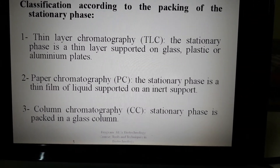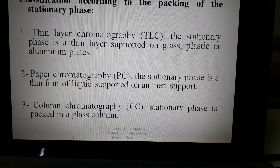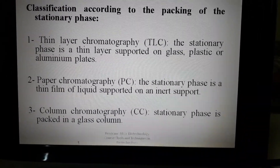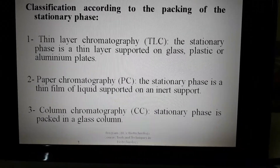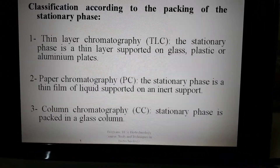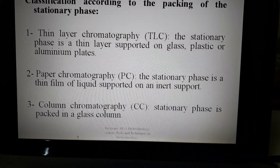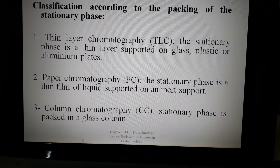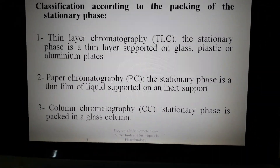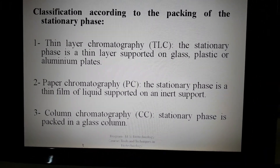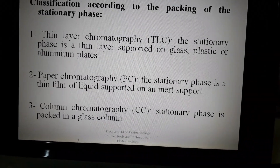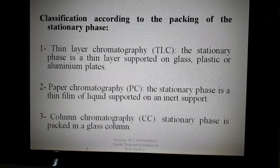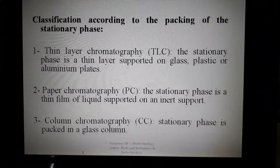In paper chromatography, the stationary phase is a thin film of liquid supported on an inert support. In column chromatography, the stationary phase is packed in a glass column, and silica gel is also commonly used as the stationary phase in column chromatography.